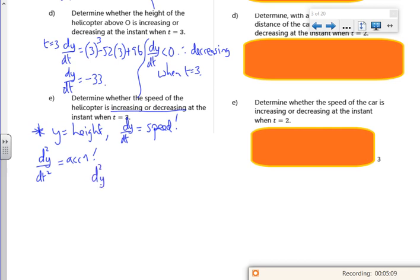So d2y by dt squared, so it's 3t squared minus 52. So when t is 3, d2y by dt squared, 3 lots of 3 squared minus 52.